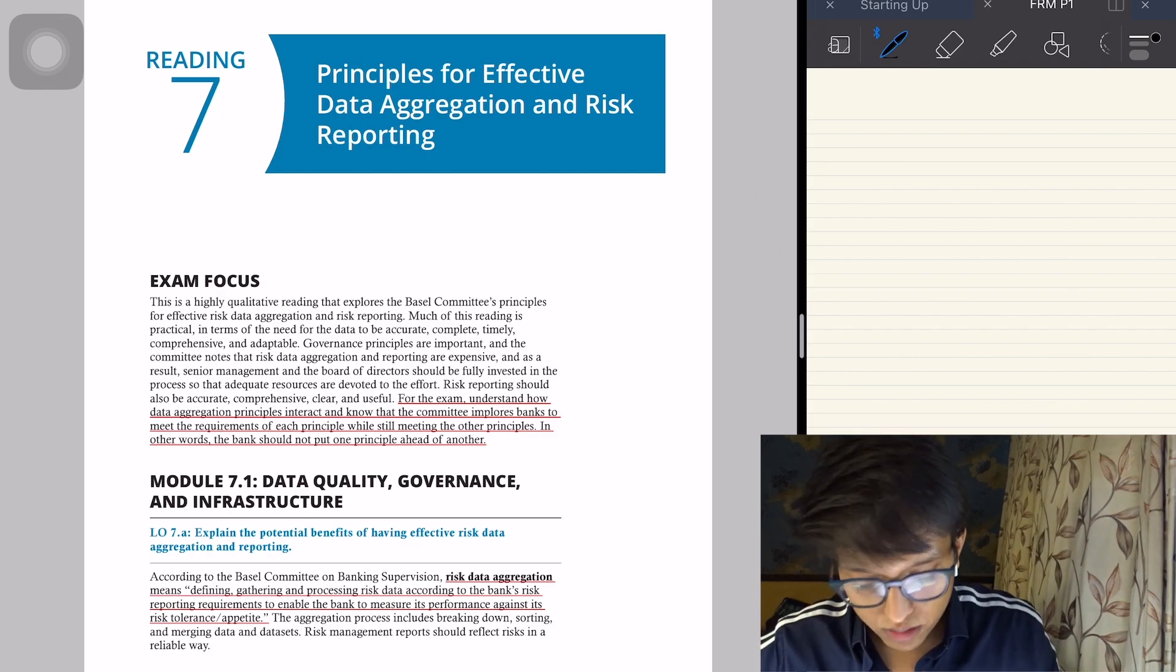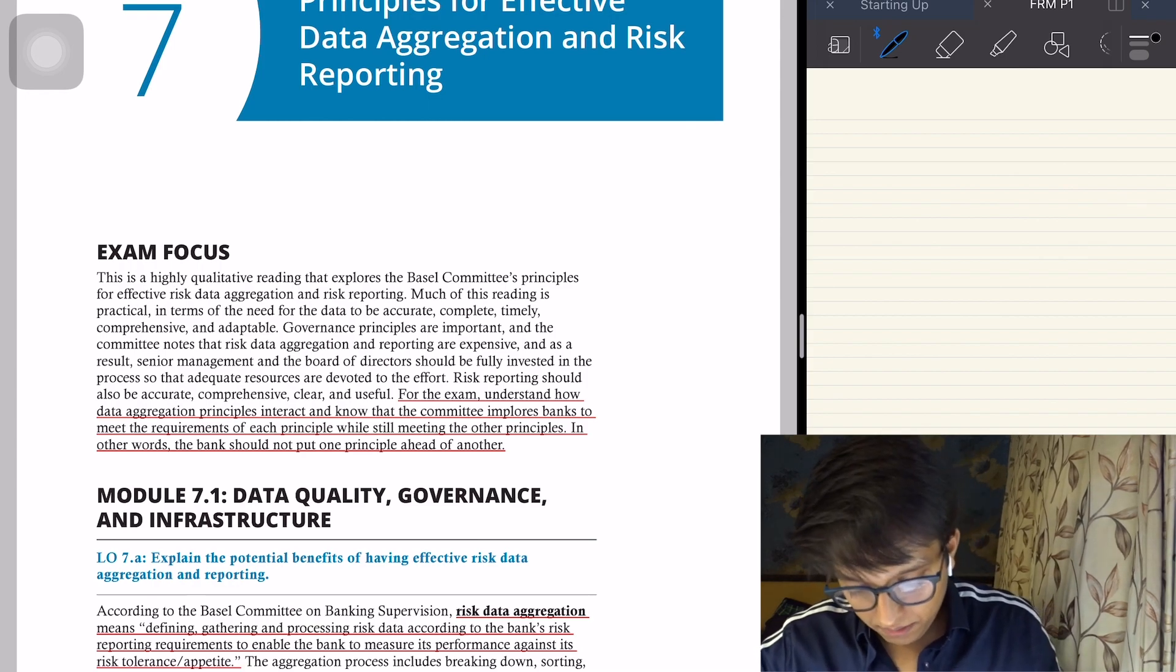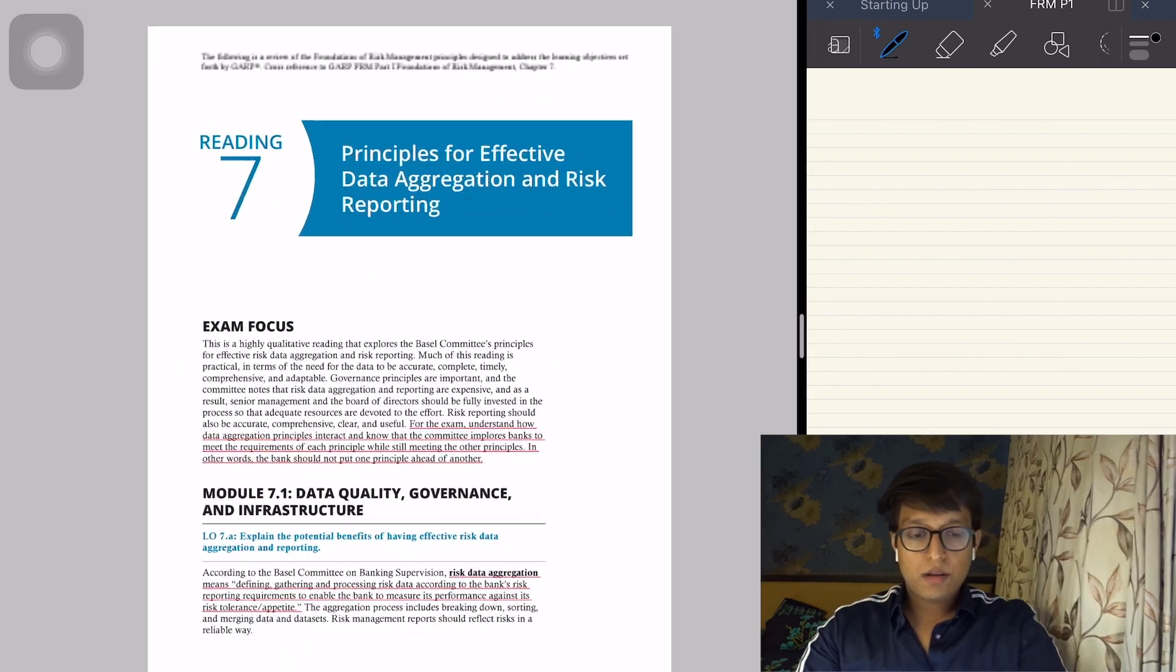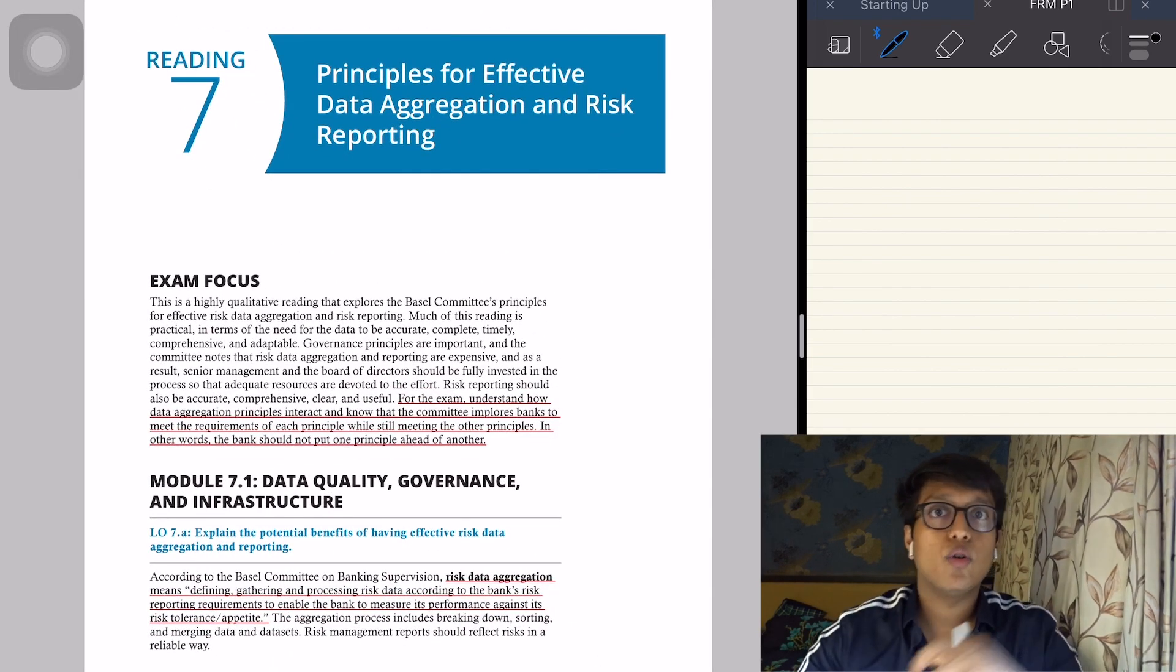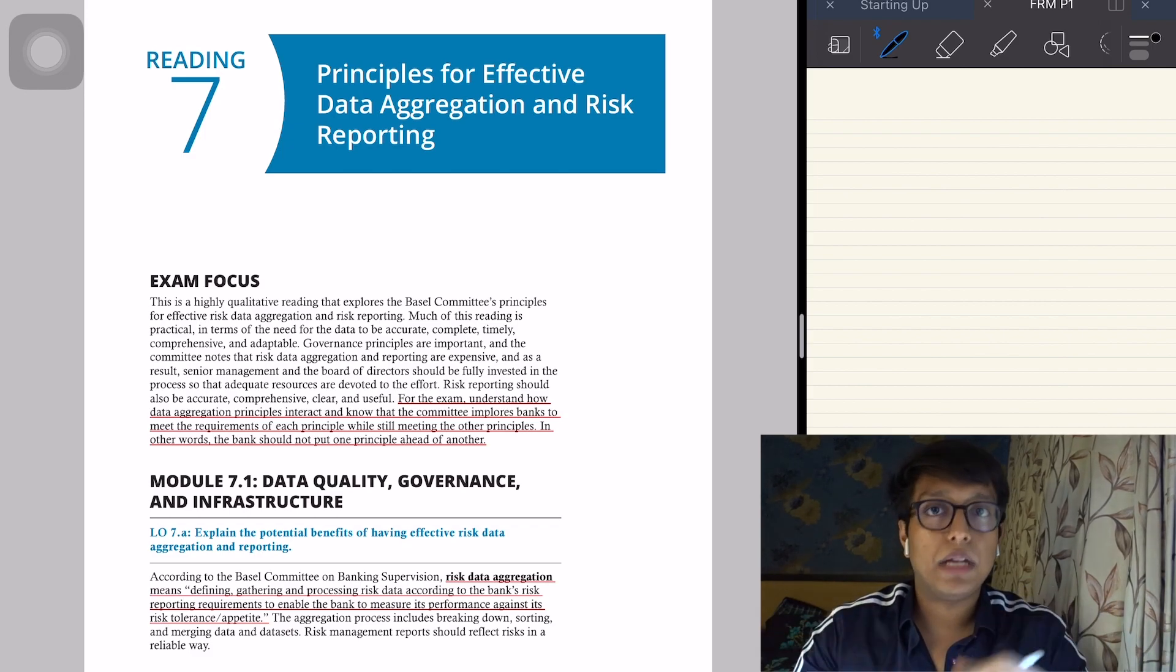Let's see the exam focus here first. For the exam, understand how data aggregation principles interact and banks should not put one principle ahead of the other. There are about 14 principles that you need to know and I would recommend you to memorize the names and what they mean.